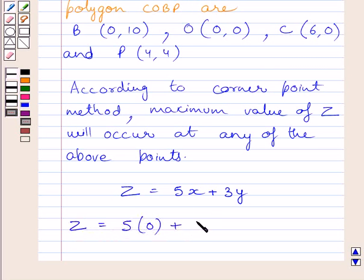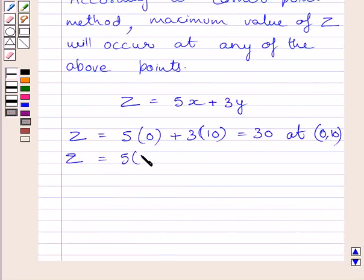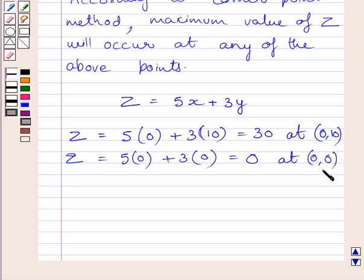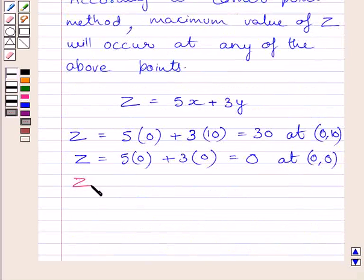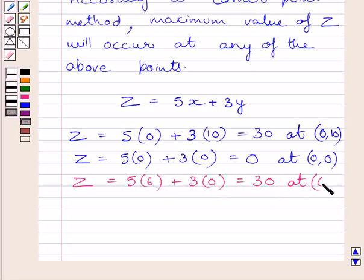At point (0, 0): substituting x = 0 and y = 0, we get Z = 0. At point (6, 0): substituting x = 6 and y = 0, we get Z = 30. At point (4, 4): substituting x = 4 and y = 4, we get Z = 5(4) + 3(4) = 32.